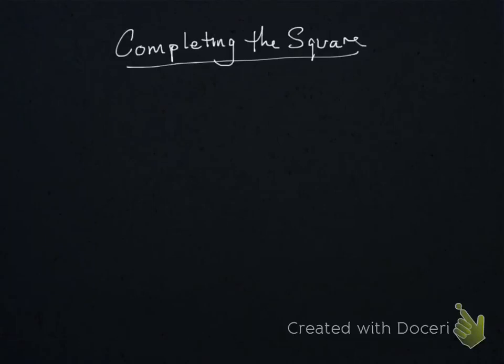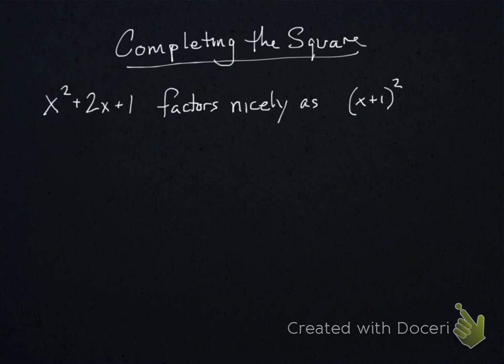Okay, now we're going to learn about a process called completing the square. Notice that x squared plus 2x plus 1 factors as x plus 1 quantity squared, and this square is called a perfect square.